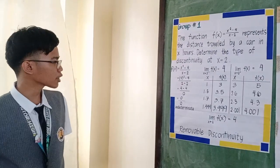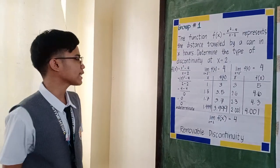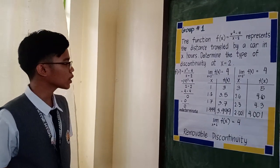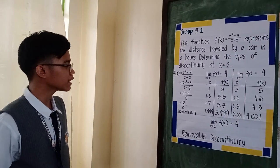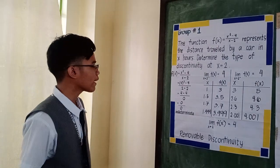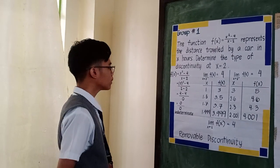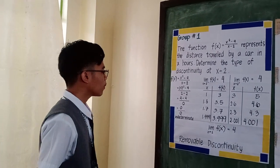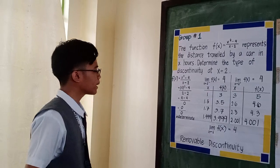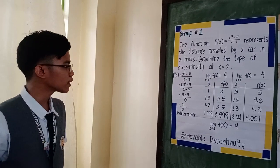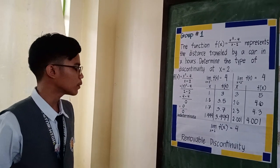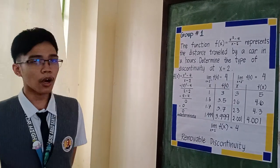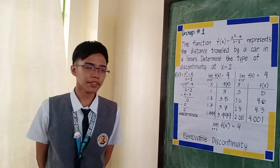Firstly, we evaluated the function, which is f of 2 is equal to x squared minus 4 over x minus 2. Substituting 2 into x: 2 squared minus 4 over 2 minus 2 is equal to 0 over 0, which is indeterminate.